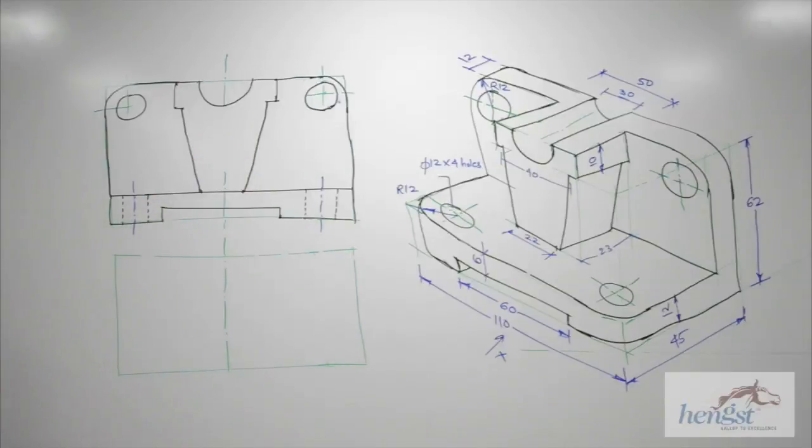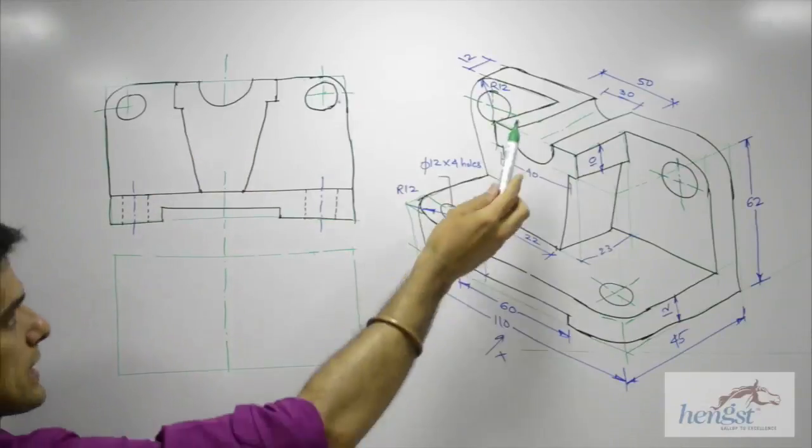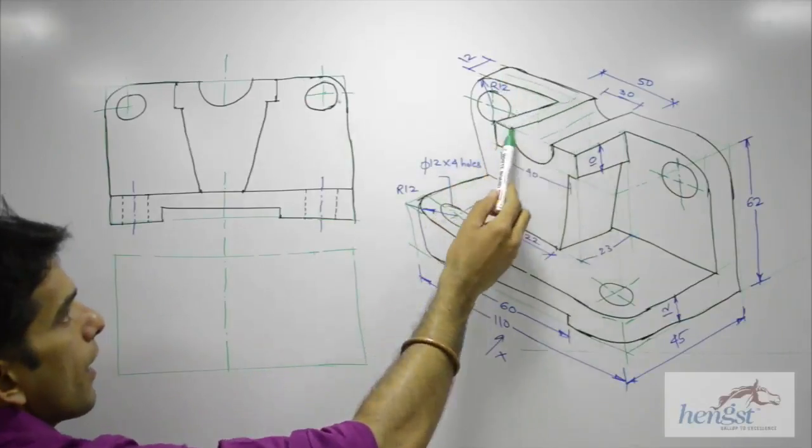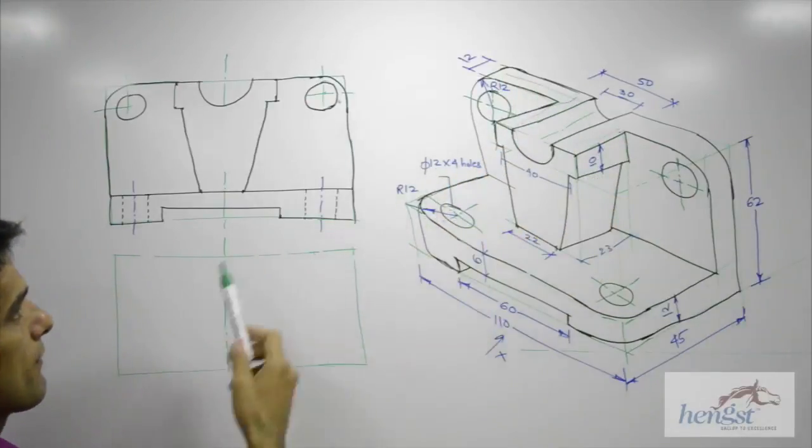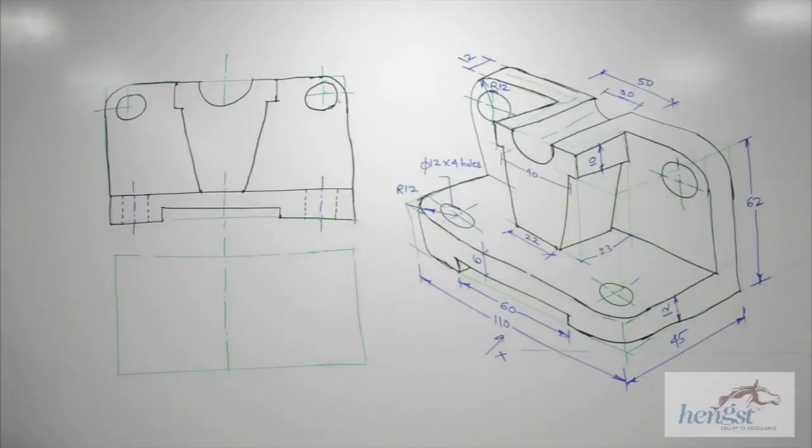Now we'll see top view. When you see from the top, you'll see this part. So that we will draw first. We will take 12 from here, draw a line, and we can project from top.